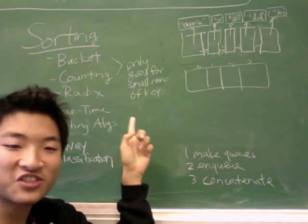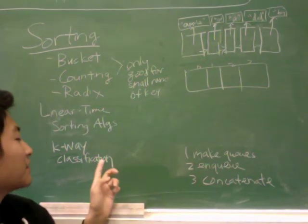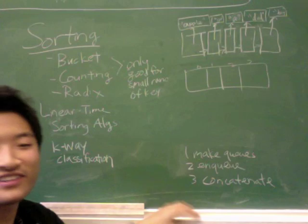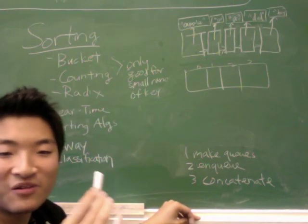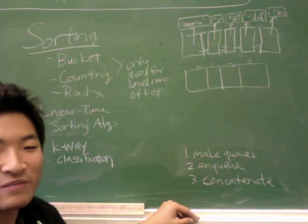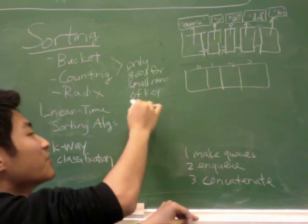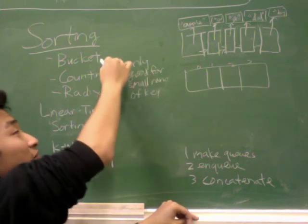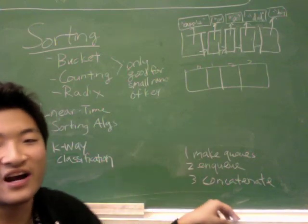These sorts are all not comparison-based sorting algorithms, but more like classification. Well, there isn't a specific name. What's important is that they all run in linear time when implemented correctly. You'll see that the one limitation for Bucket Sort and Counting Sort is that your range of keys can't be too big. We'll see why.